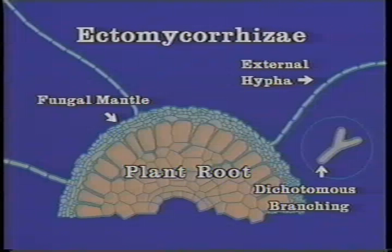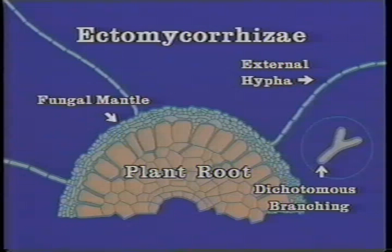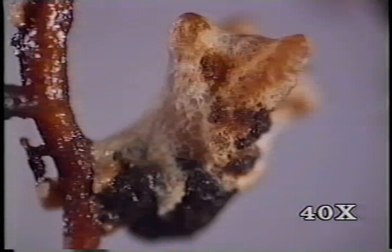Commonly colonized plants include oaks, beeches, birches, and coniferous trees. Root tips are often dichotomously branched, and a fungal mantle is formed surrounding the roots. The root tip is covered with white hyphae, which form the mantle.